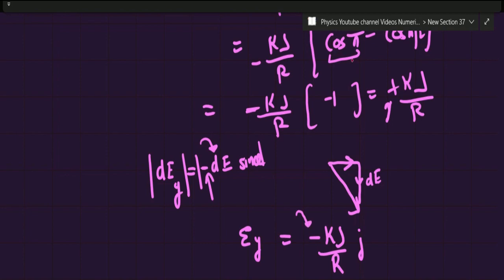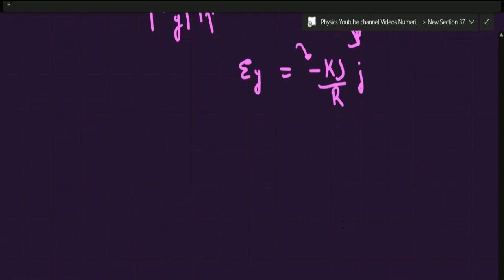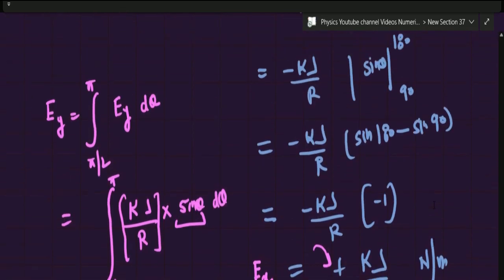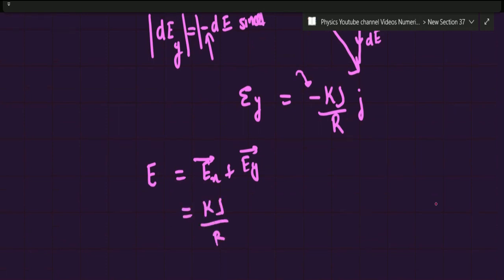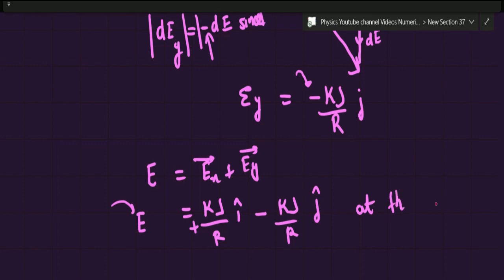If you write the overall expression of E as a vector — Ex + Ey — looking at Ex, it comes out to be kλ/r, and Ey is −kλ/r · ĵ. So the electric field due to the complete arc at the origin is E = (kλ/r)î − (kλ/r)ĵ. This is the way you actually calculate the general expression. Now in the question we have been given three arcs, and we did this whole derivation for a positive charge.